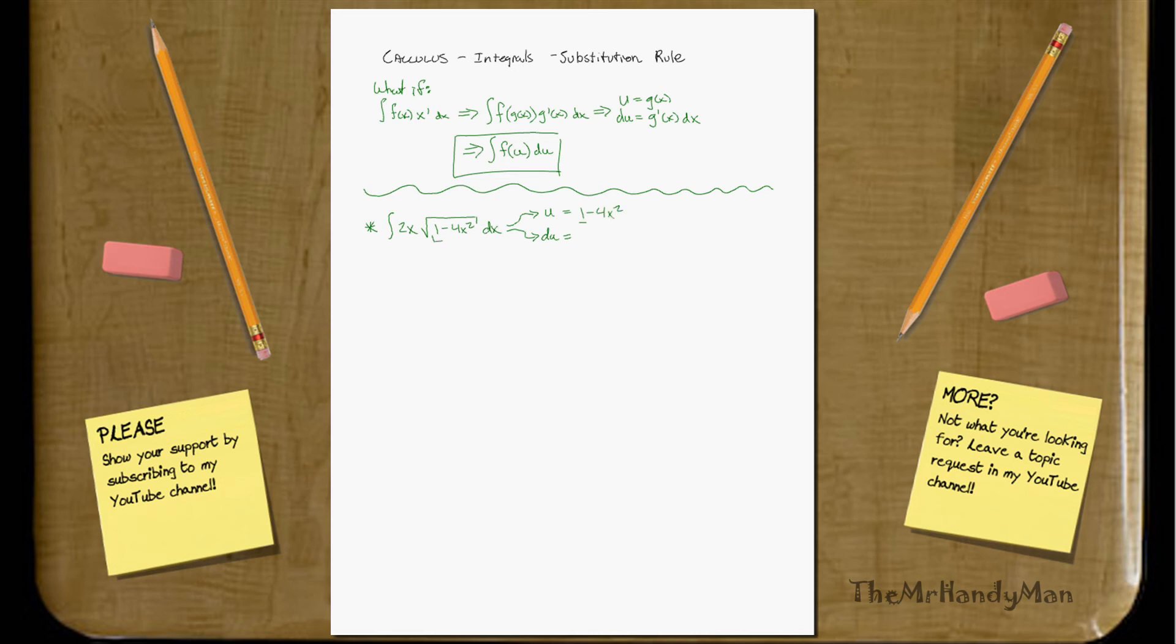And generally, it's always the things inside, like the square root or the square, or inside the parentheses, it's usually that thing. So, I'm just picking that as my u.